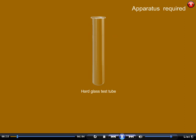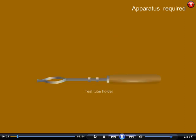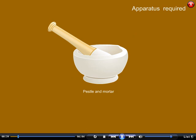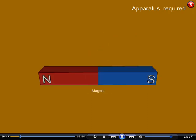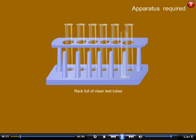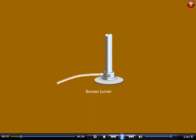Apparatus required: hard glass test tube, test tube holder, pestle and mortar, two watch glasses, hand lens, magnet, rack full of clean test tubes, Bunsen burner.